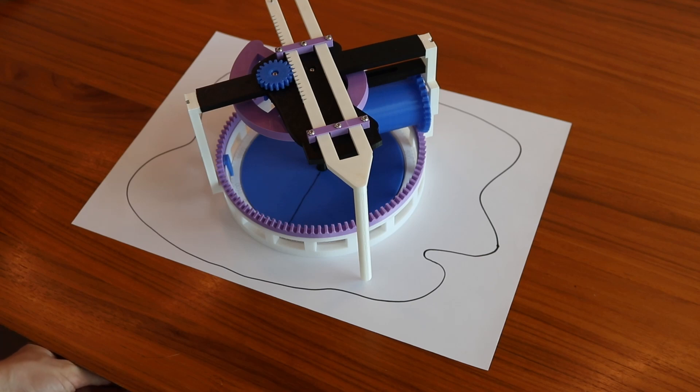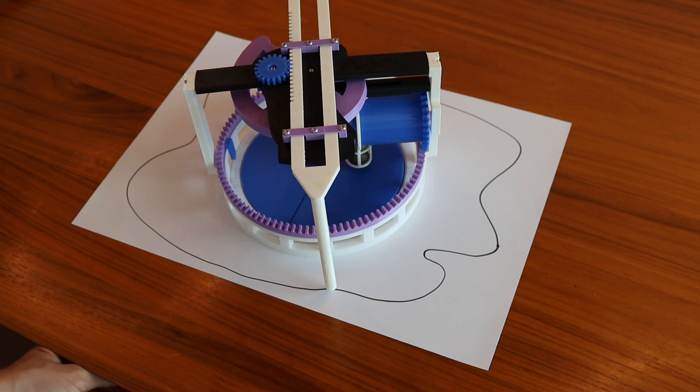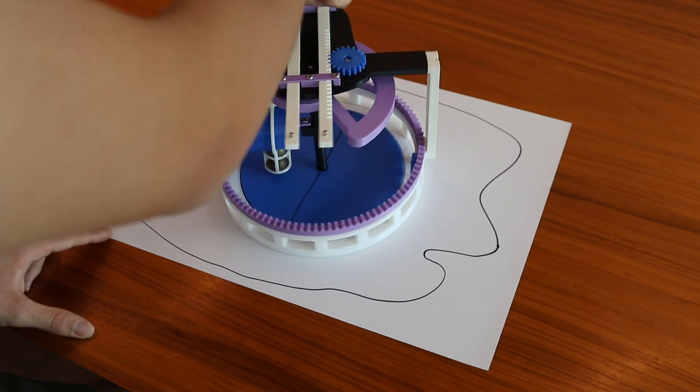Welcome to this video, where I show you the radial planimeter that I built. It's called a radial planimeter because a planimeter is a device that finds the area of some shape, and it's radial because it rotates around an axis.